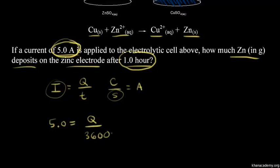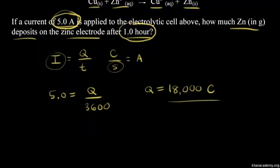Now we can solve for Q, we can solve for the charge. So 5 times 3600 is equal to 18,000. So after one hour, we're talking about 18,000 Coulombs. From the charge, we can figure out how many moles of electrons we're dealing with here because of Faraday's constant. Remember, Faraday's constant tells us that one mole of electrons has a charge of 96,500 Coulombs.